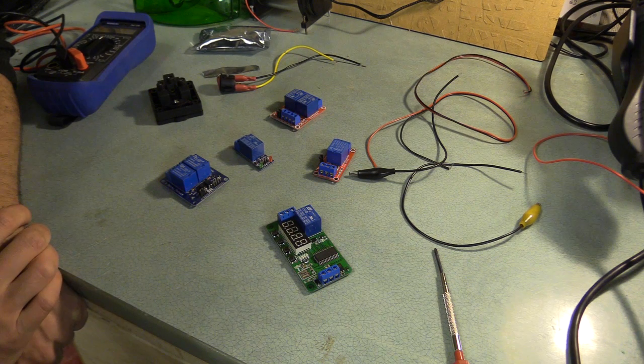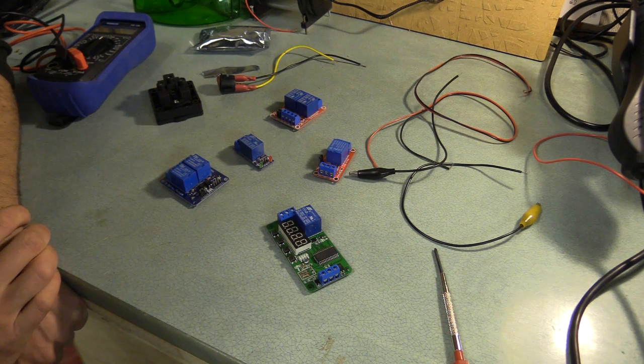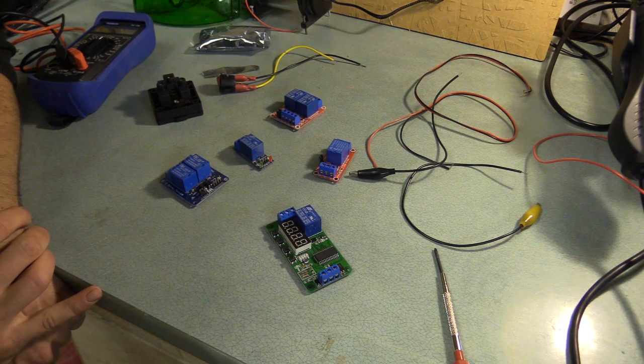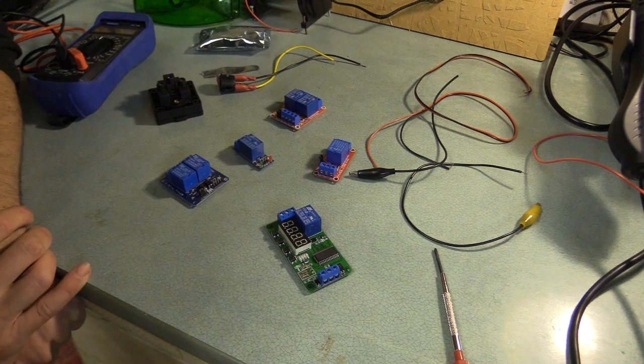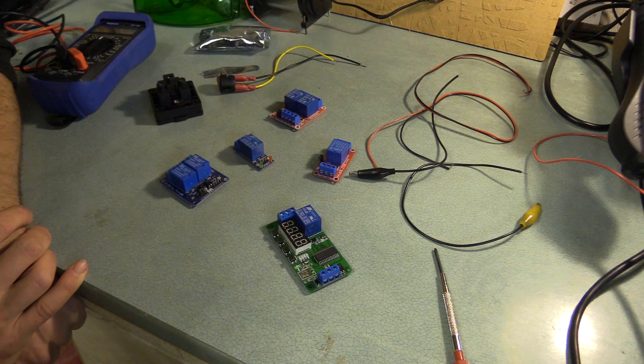There was some information in the variable frequency drive manual which suggested I could use a timer feature, and if I was going to do that I wasn't sure if I needed a relay with an active high or low trigger. I even bought one relay with a built-in timer circuit in case that didn't work.